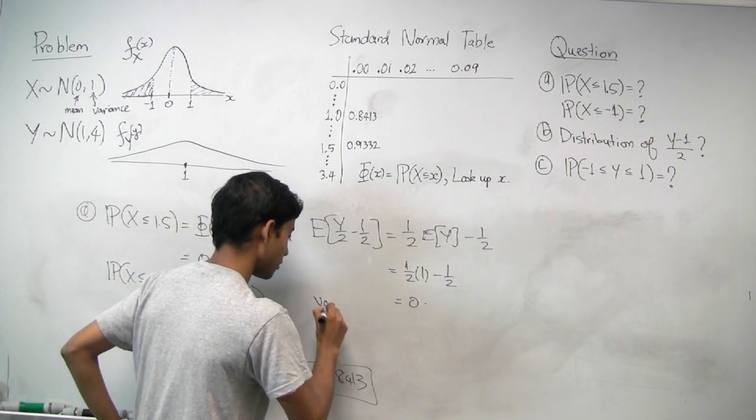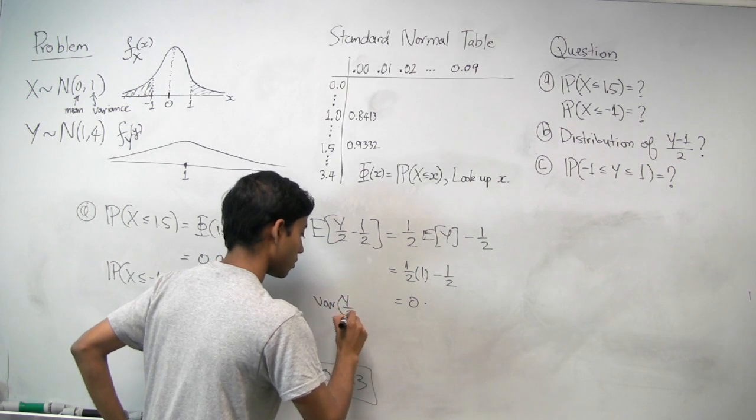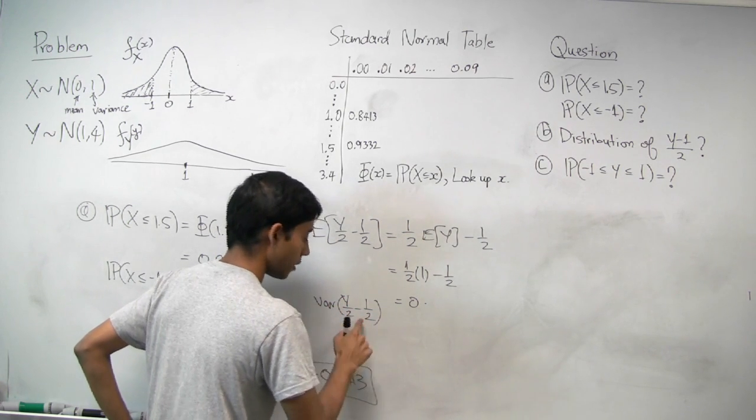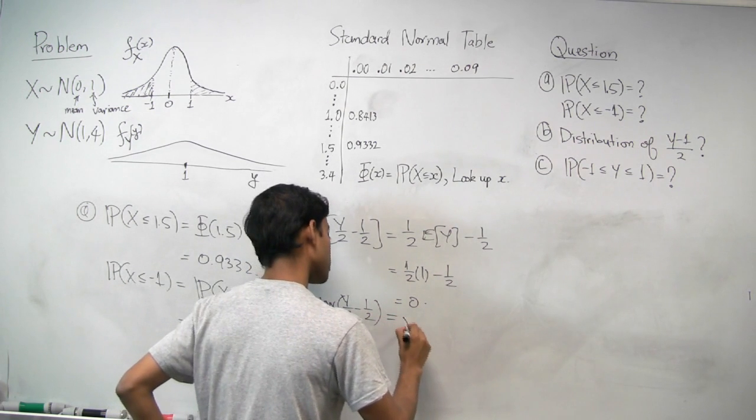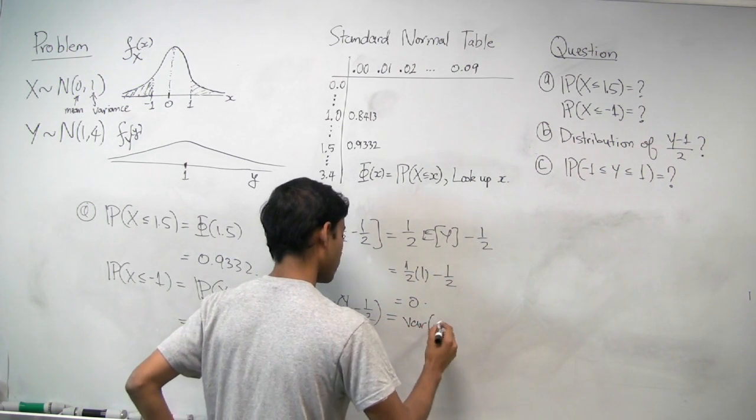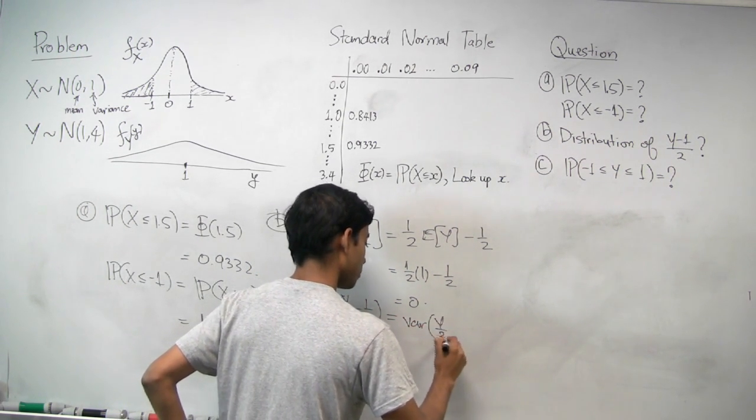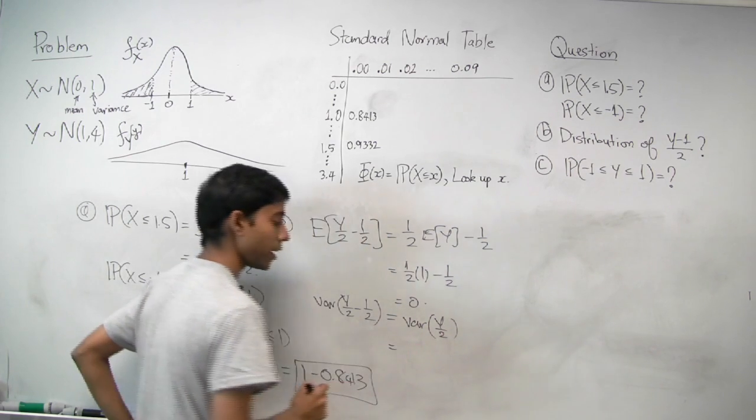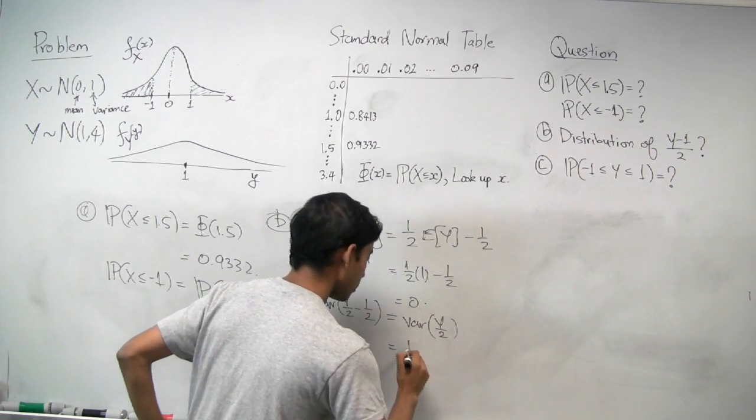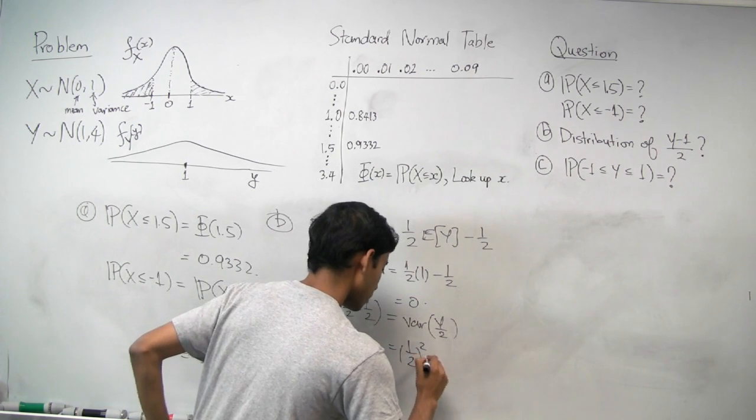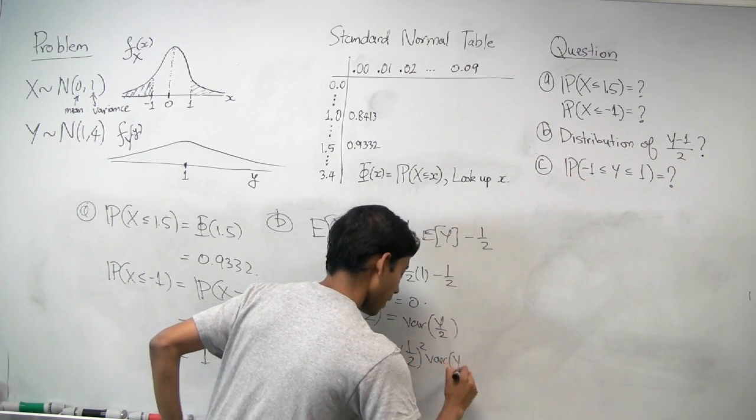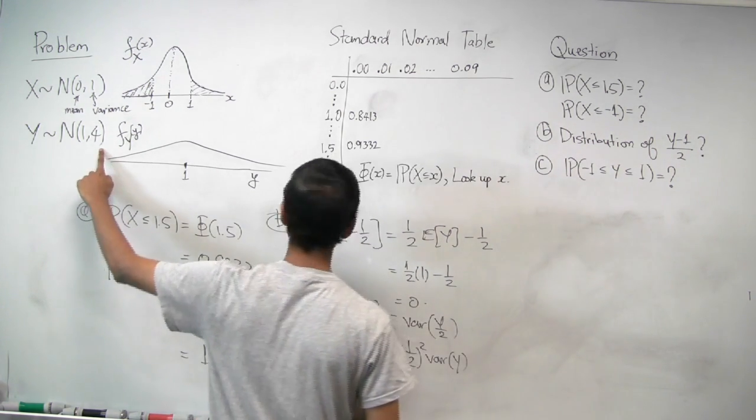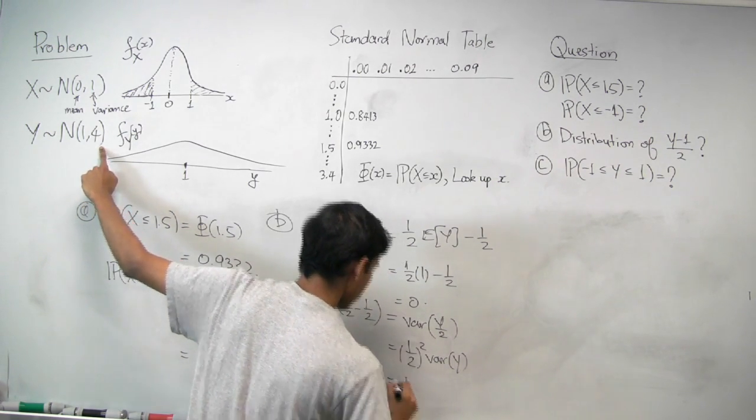Now the variance. For the shift, it doesn't affect the spread, and so the variance is exactly going to be the same without the minus 1 half. And for the constant, you can just pull that out and square it. And the variance of Y, we know, is 4. And so that's 1 fourth times 4, that's 1.